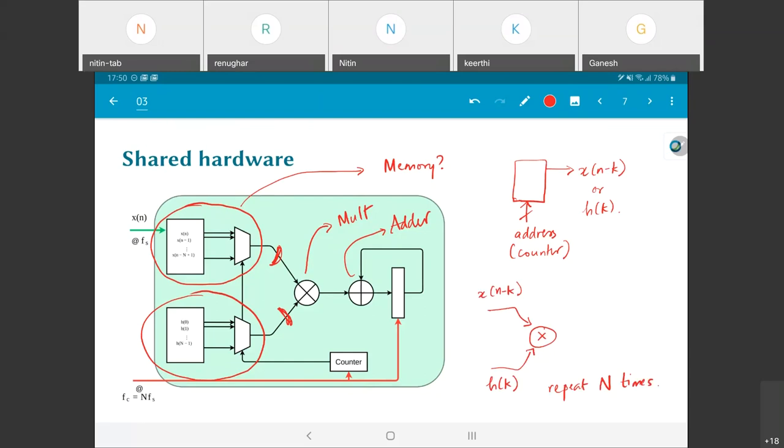How do I repeat it capital N times? That is where this counter comes in. By having a counter which says I will count from 0 up to capital N minus 1, I can change the inputs going into the multiplier capital N times and get each of the successive values applied as inputs to the multiplier.